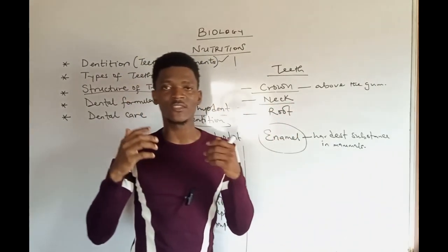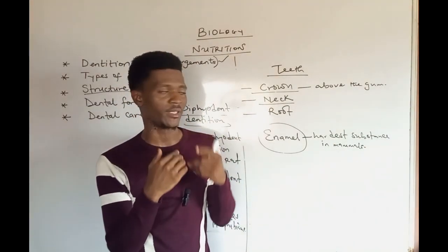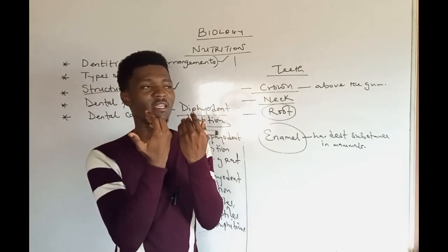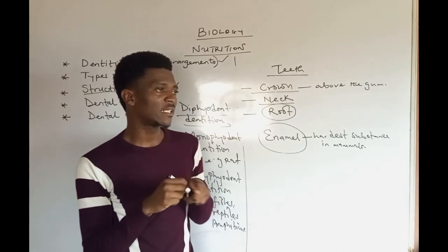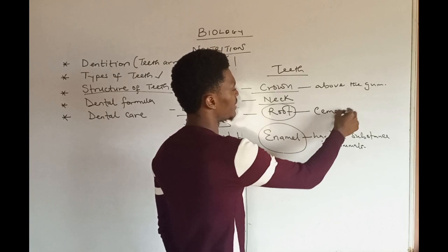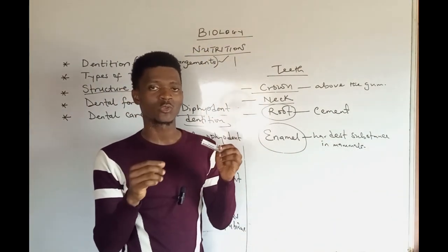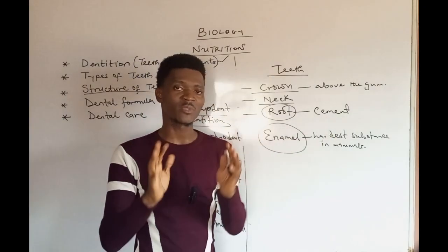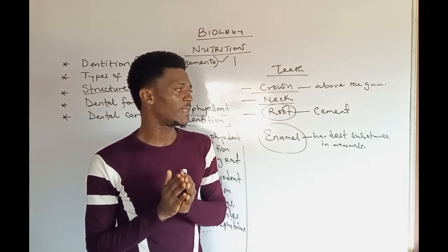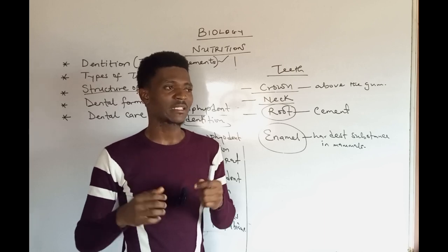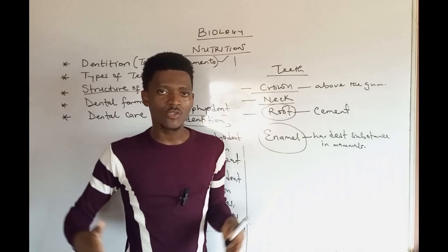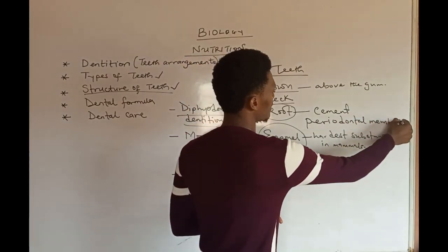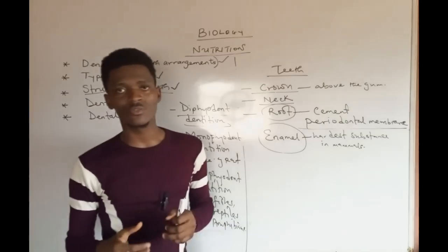The neck region of the teeth is just like a junction between the crown and the root. The root is made up of a very hard material that covers it, called cement. It is the root of the teeth that is fastened to the jaws. The cement surrounds and protects the root, and there is a membrane of fibrous tissues that fits the root to the jaws — called the periodontal membrane. The membrane that attaches the root of the teeth to the jaws is called the periodontal membrane.